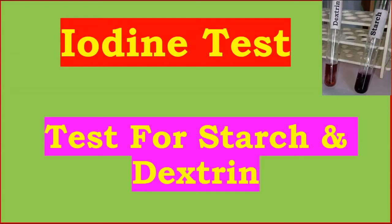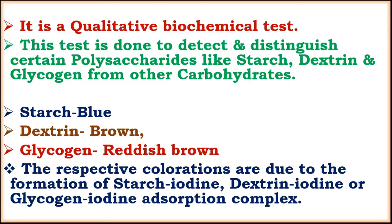The iodine test is a qualitative biochemical test used to detect and distinguish certain polysaccharides like starch, dextrin, and glycogen from other carbohydrates. Starch gives a blue color, dextrin gives a brown color, and glycogen gives a reddish-brown color to the iodine test.